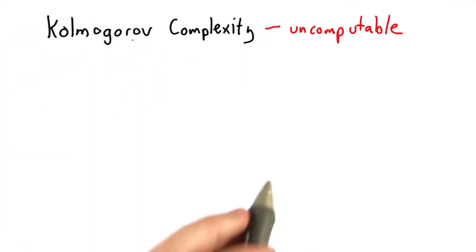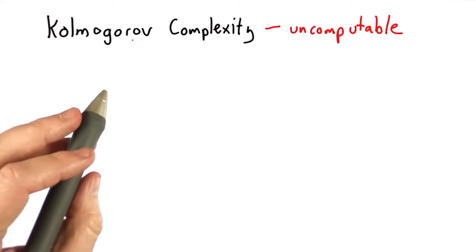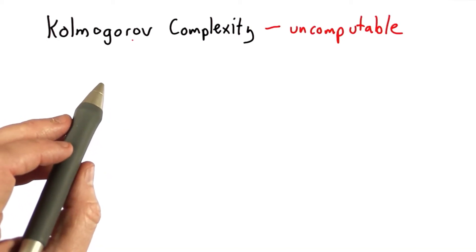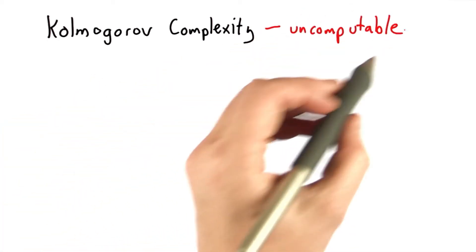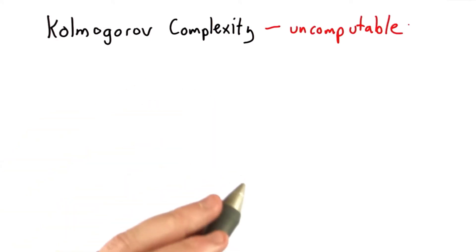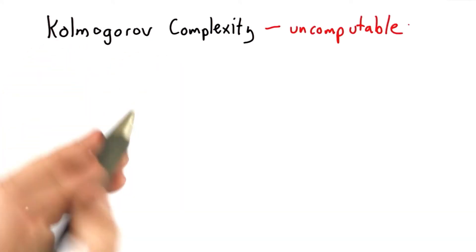So-called Kolmogorov complexity gives us an interesting way to think about randomness. It's certainly a useful notion in many areas of computer science. But it's not going to give us a practical way to tell if a sequence is random. It won't even give us a theoretical way to do that because it's uncomputable.